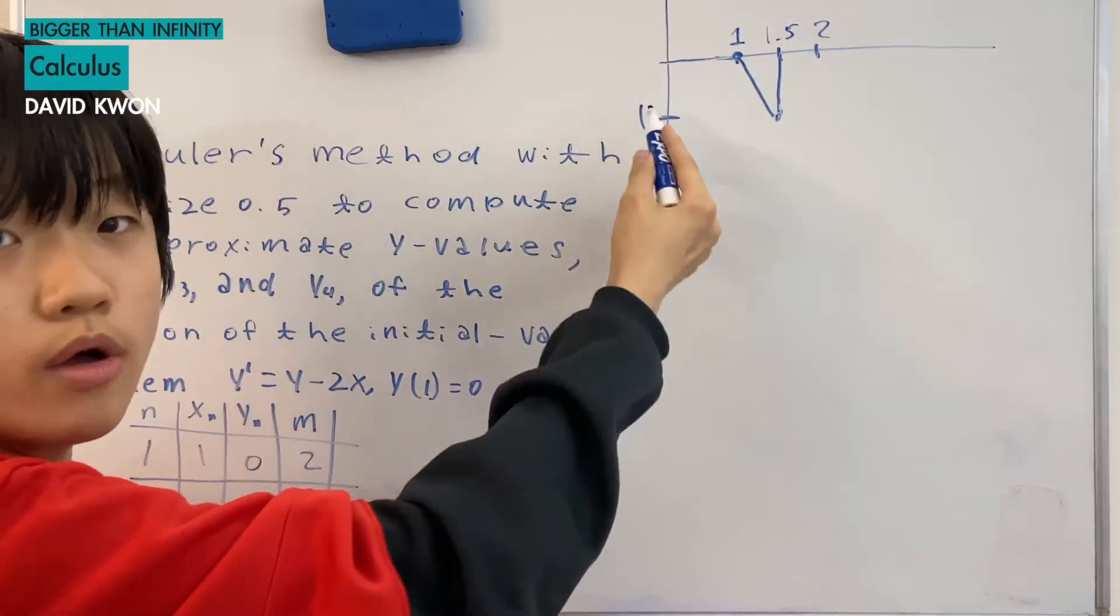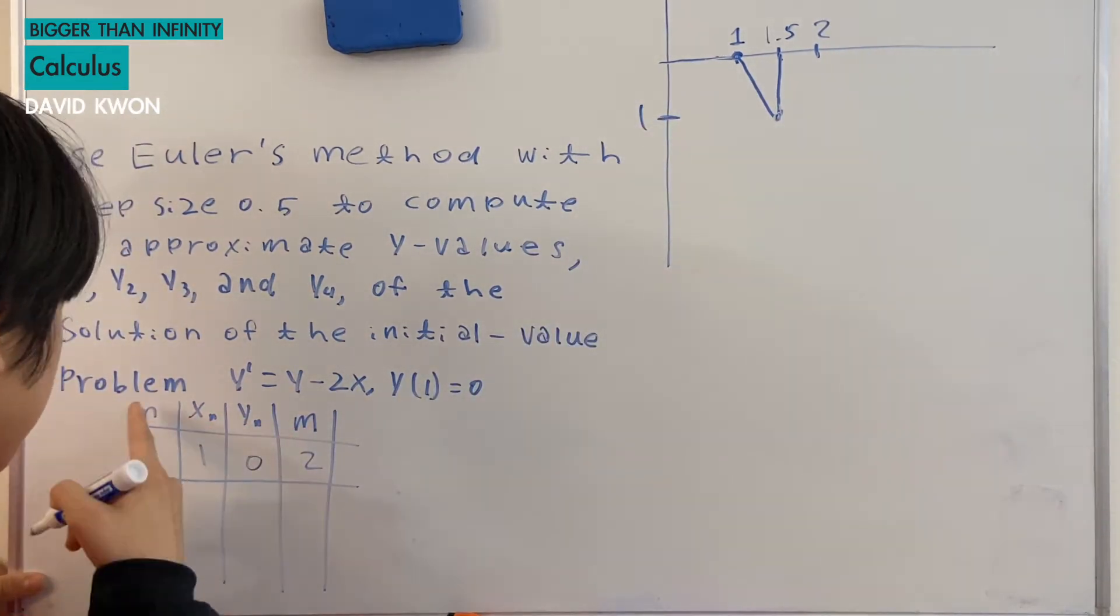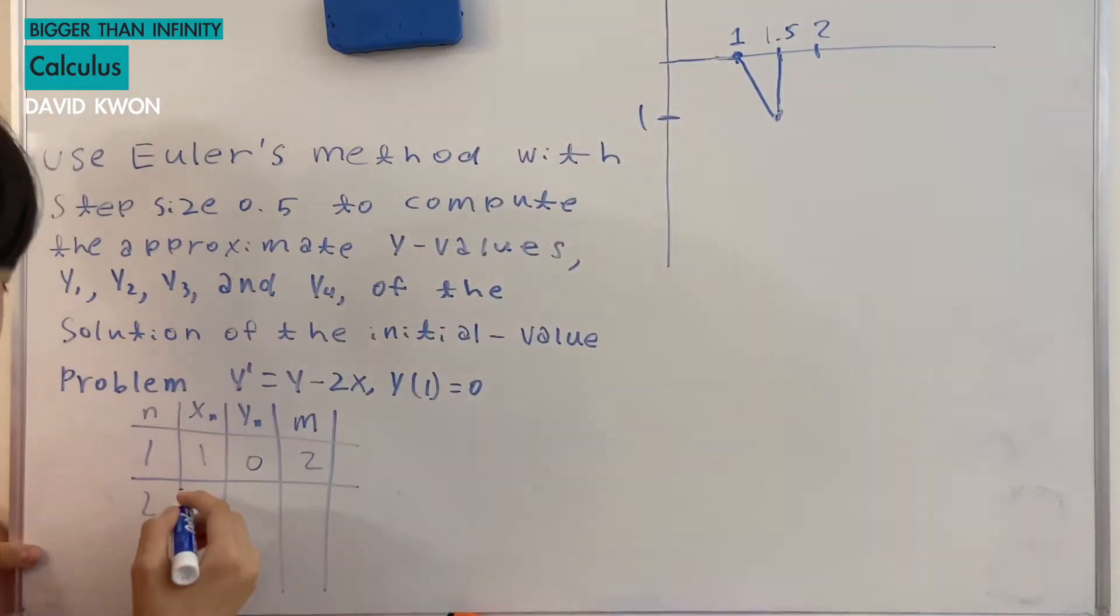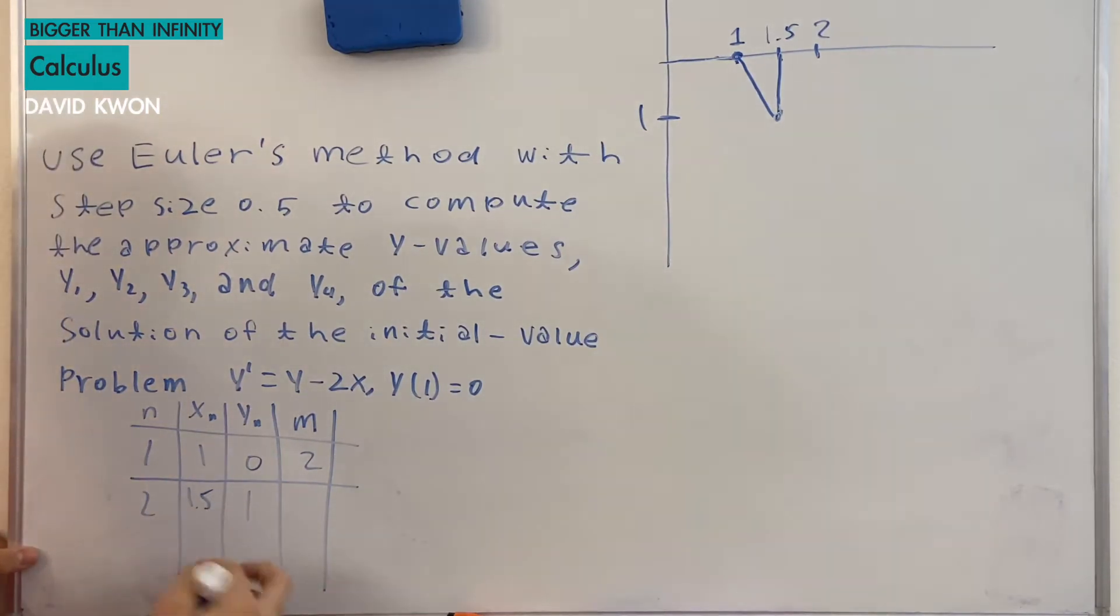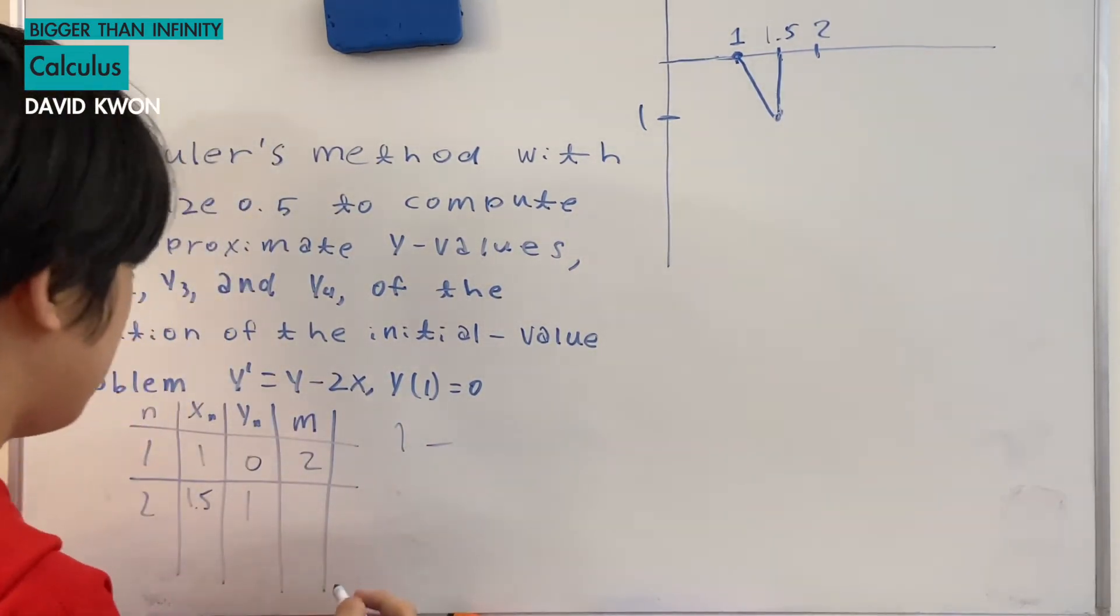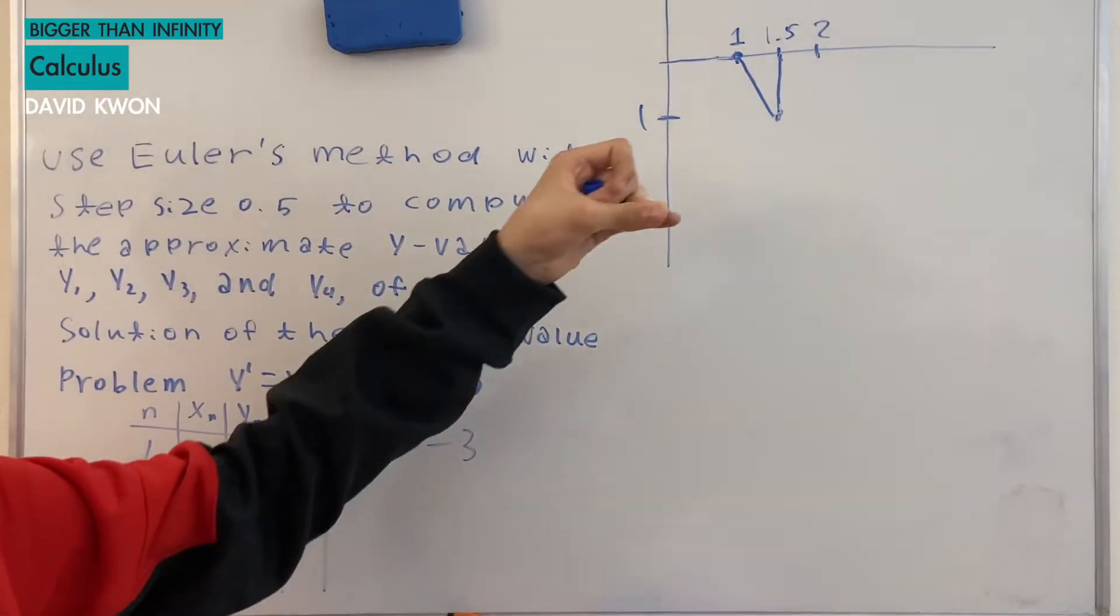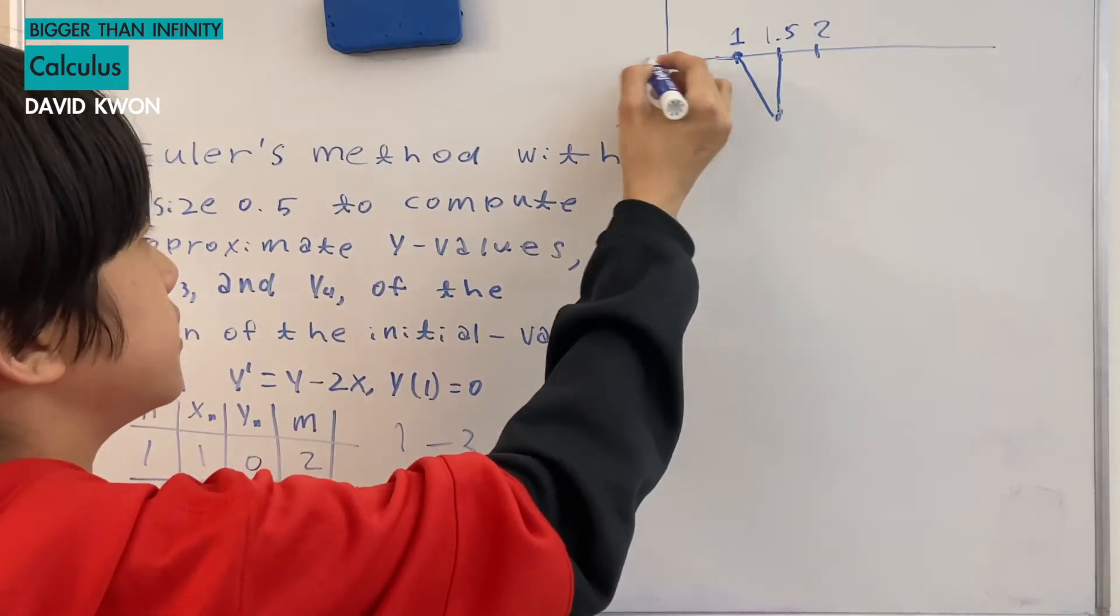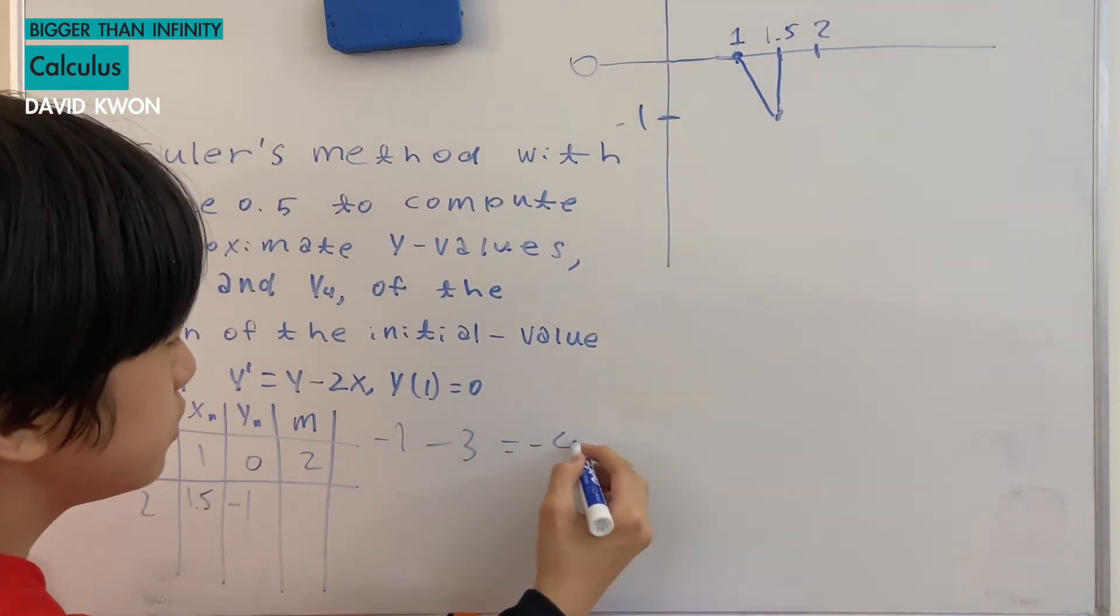And now we start from here. Okay what's the point? x is equal to 1.5 and y is equal to negative 1. So when n is equal to 2 we have x2 as 1.5 and y as negative 1. And what's the slope again? We just put these two back in here. So putting the value of y into here we get negative 1 minus putting 1.5 we get 3. And that's equal to negative 4.